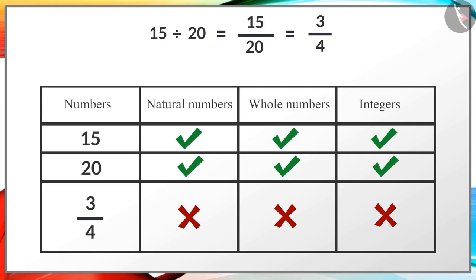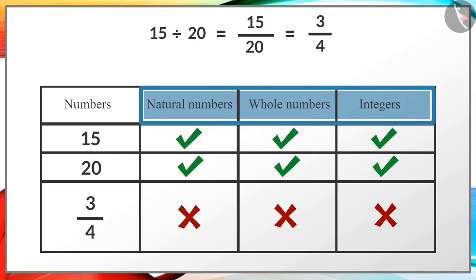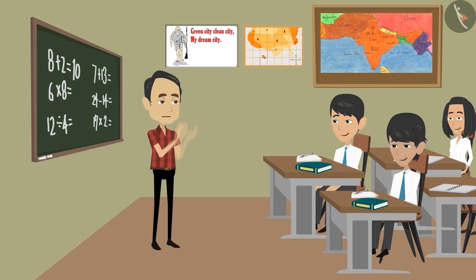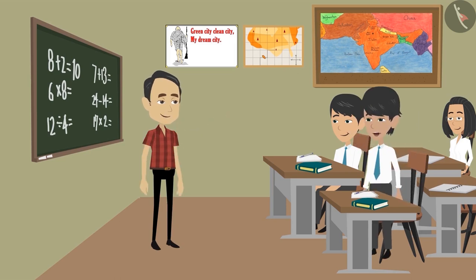Children, what do you understand from this table? Sir, this table shows that natural numbers, whole numbers, and integers are not closed under division. Well done, Rahul, you have given the right answer.